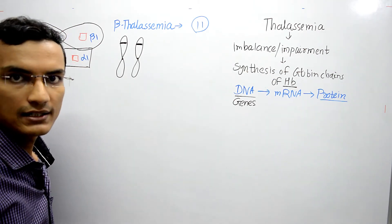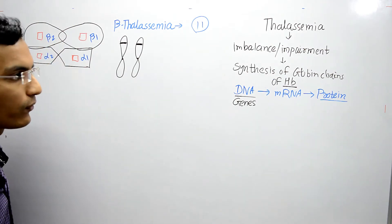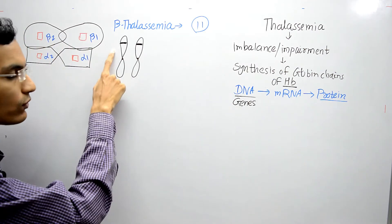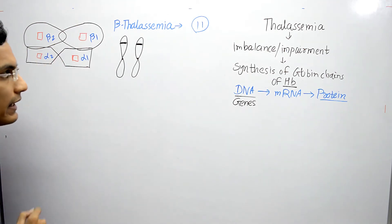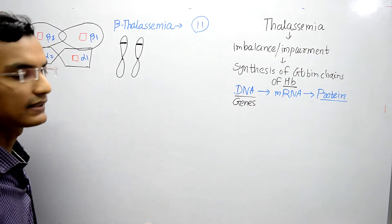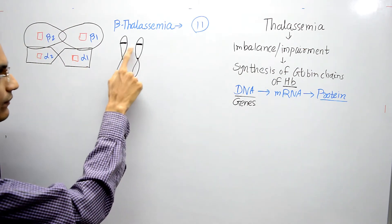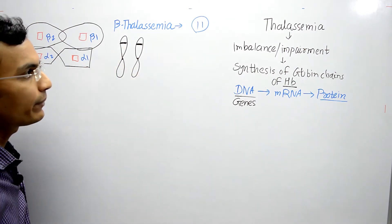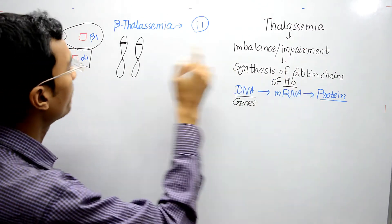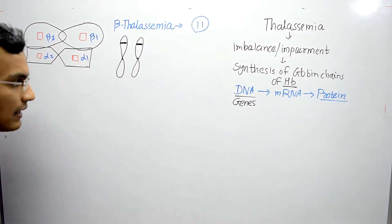In the case of alpha thalassemia, or the synthesis of alpha globin chains, there are four different genes — two on each chromosome. But in the case of beta globin chains, there are only two genes responsible for the coding of beta chains. If there is any defect or mutation in these genes, there will be impairment in the synthesis of beta globin chains, and that's why we call it beta thalassemia.